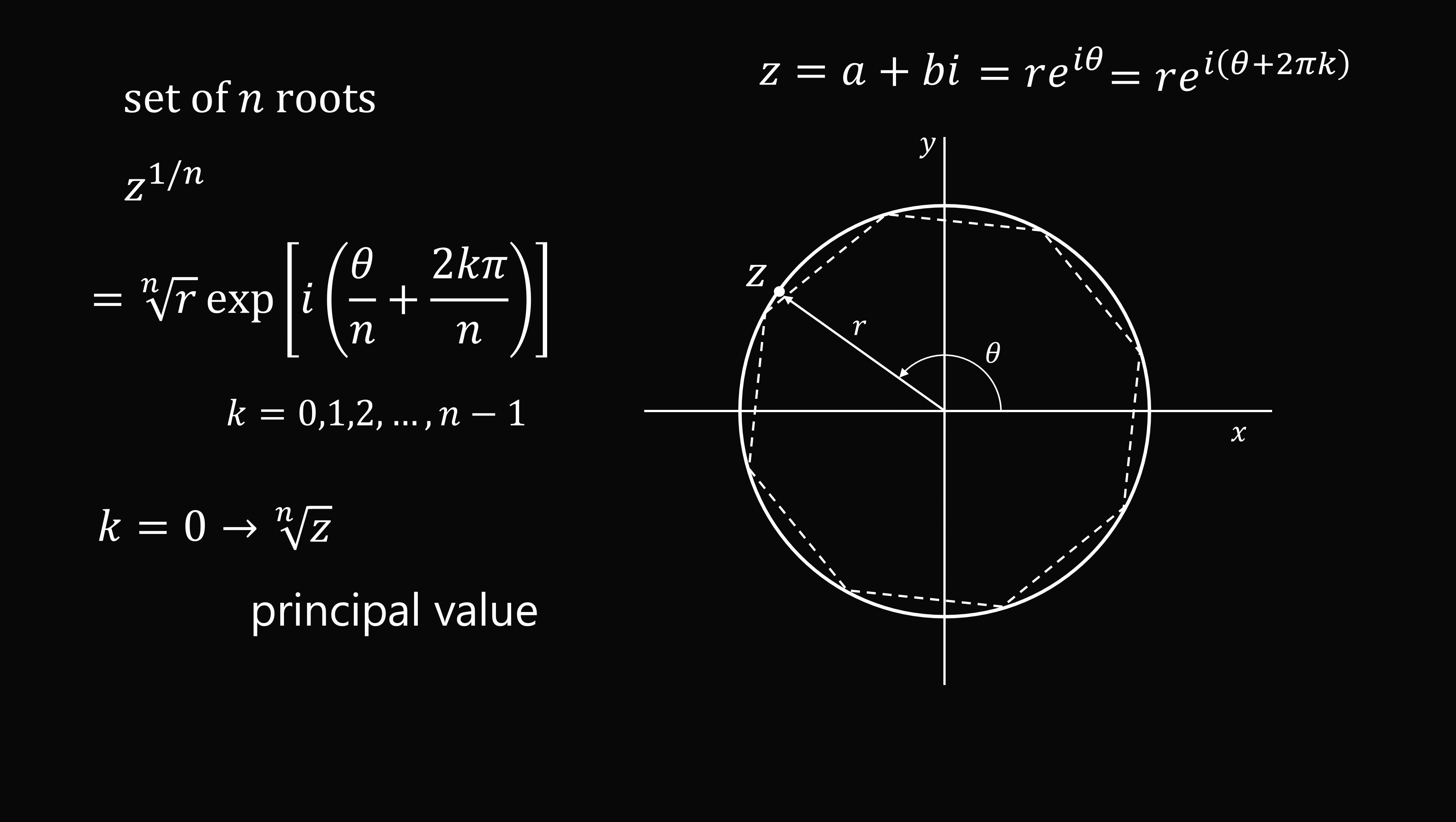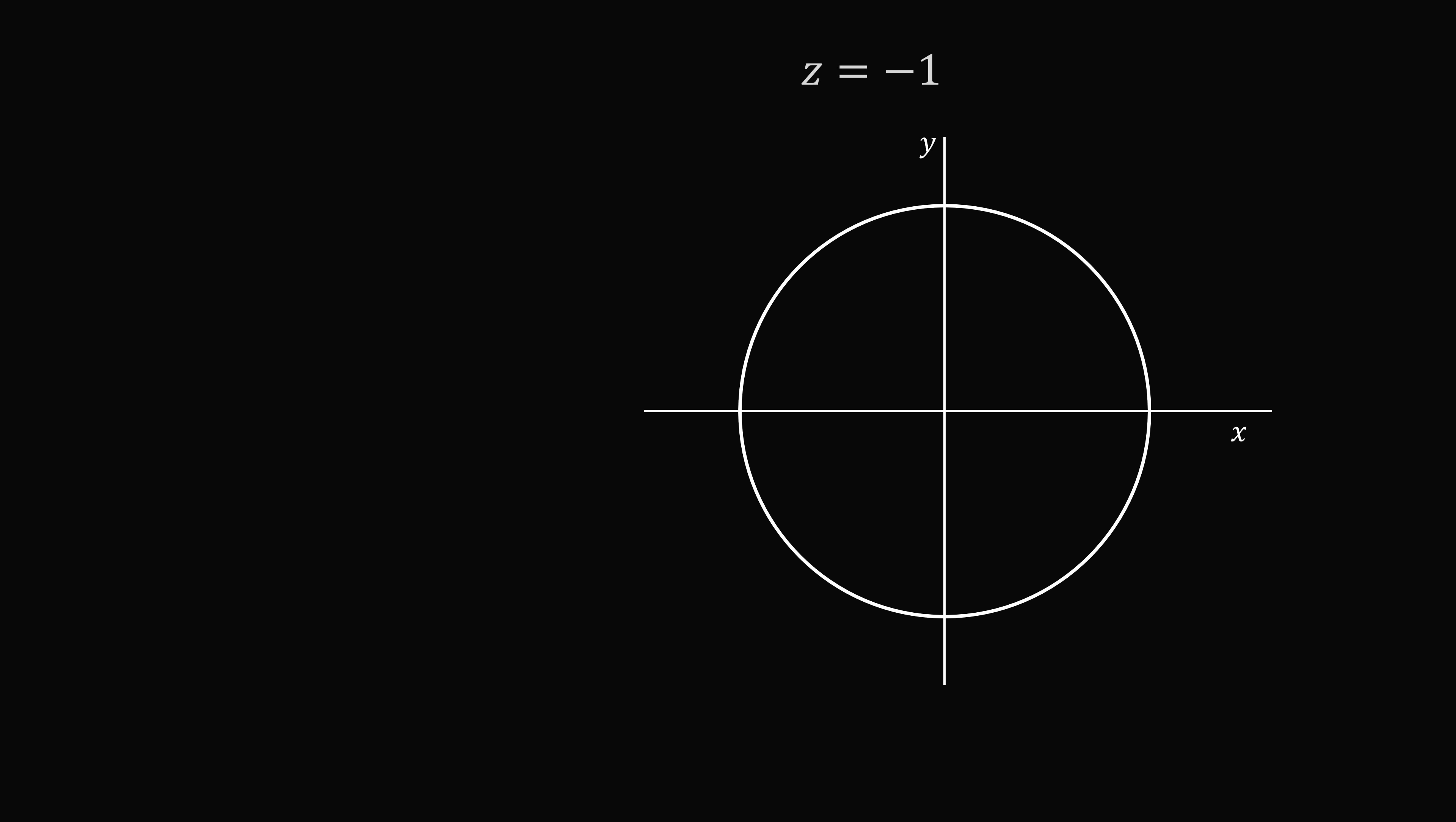So let's see how this works out with z is equal to negative 1. So first we have z is equal to negative 1. We want to write this in polar form. So we first see that z is equal to negative 1 is this point right here. The radius will be equal to 1, and the angle will be theta is equal to pi. So in polar form, this is equal to e to the power of i pi plus 2 pi k.